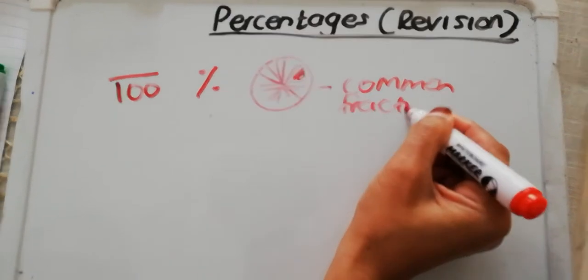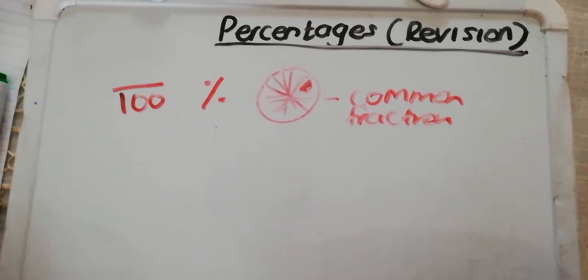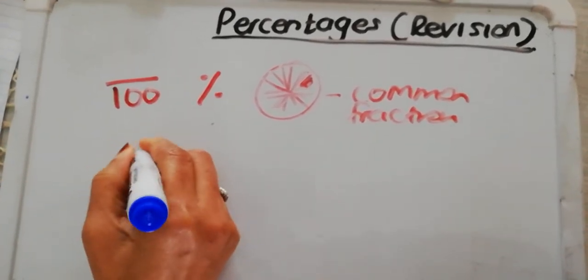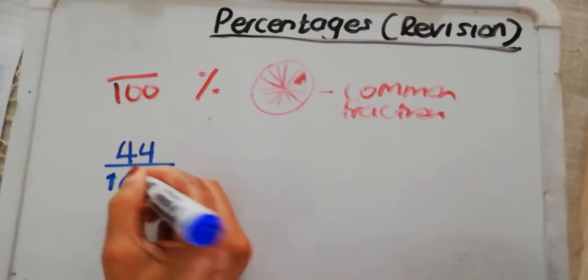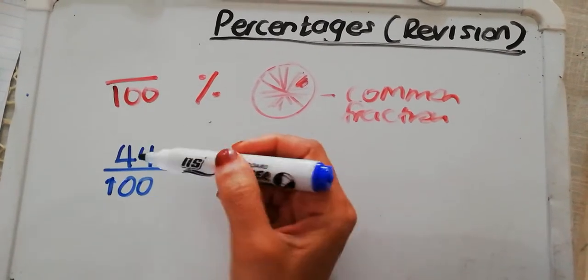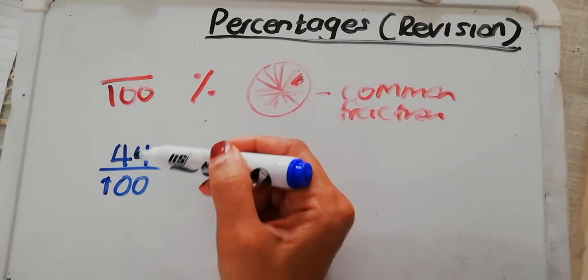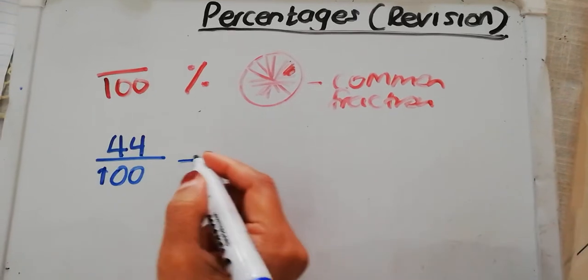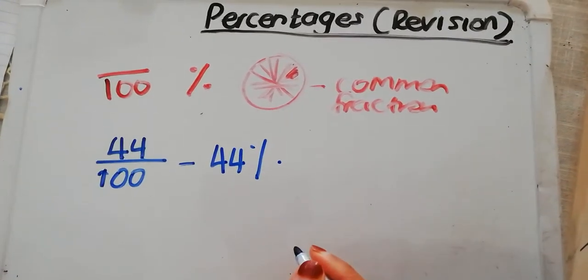Let's go straight into recapping what we have learned before. If I have a common fraction, a common fraction to remind you is a fraction where the denominator is bigger than the numerator. This is a numerator, this is a denominator. When we have a number like this, if it's over 100, straight away we can convert it and say it is 44%.